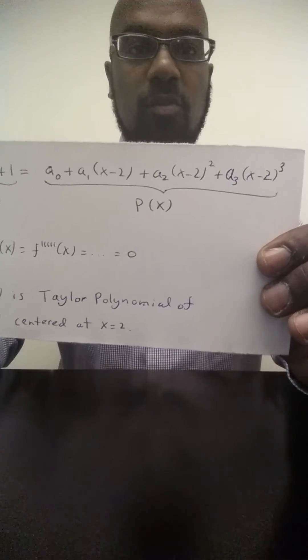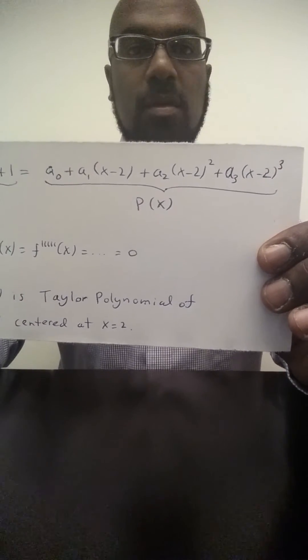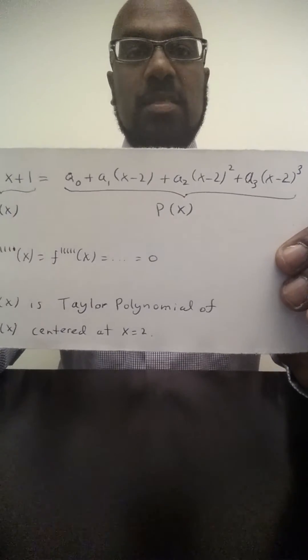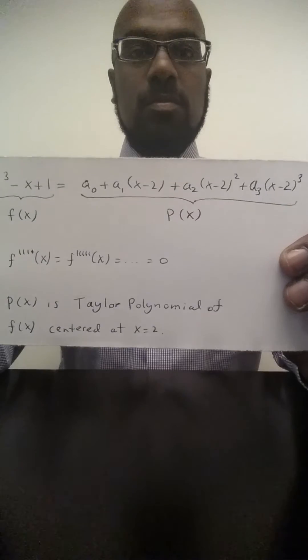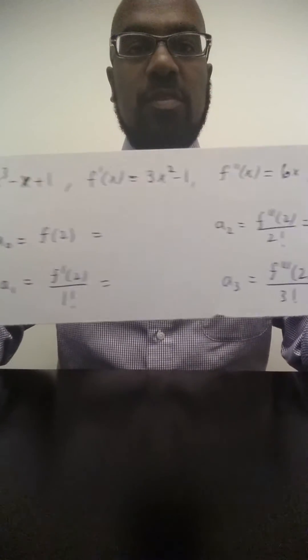So in order to compute the coefficients of the right-hand side, we can recognize that these are the Taylor series coefficients centered at x equals two. And we have formulas for those things. So here we've computed f(x) and its derivatives.